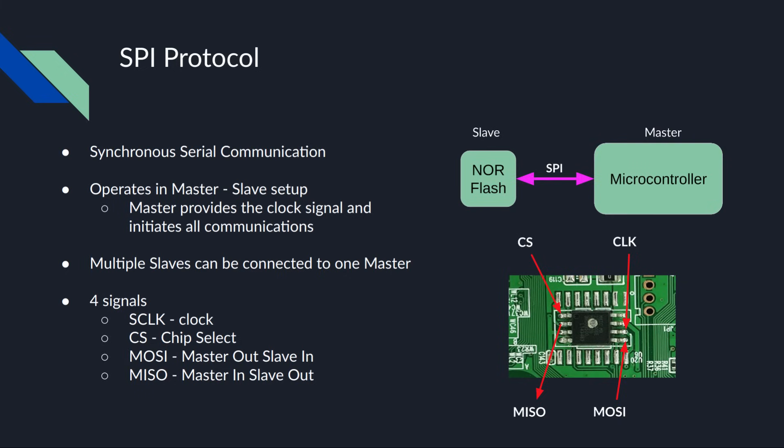The slave is where data is written to or read from, but data flows both ways. The master provides a clock signal which determines the speed of the communication. Multiple slaves can be connected to one master, but a slave cannot connect to another slave. SPI requires a minimum of 4 wires for communication.